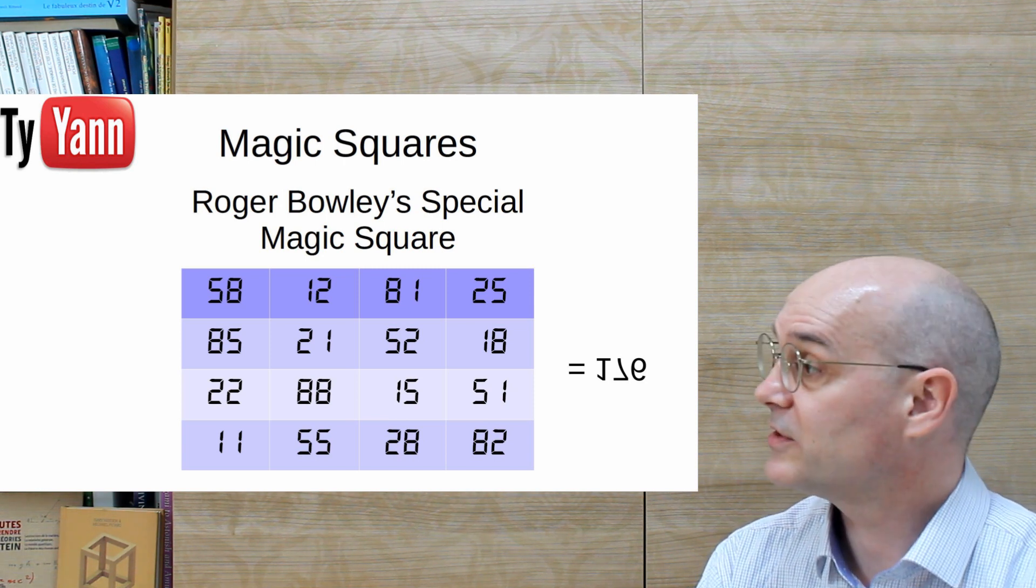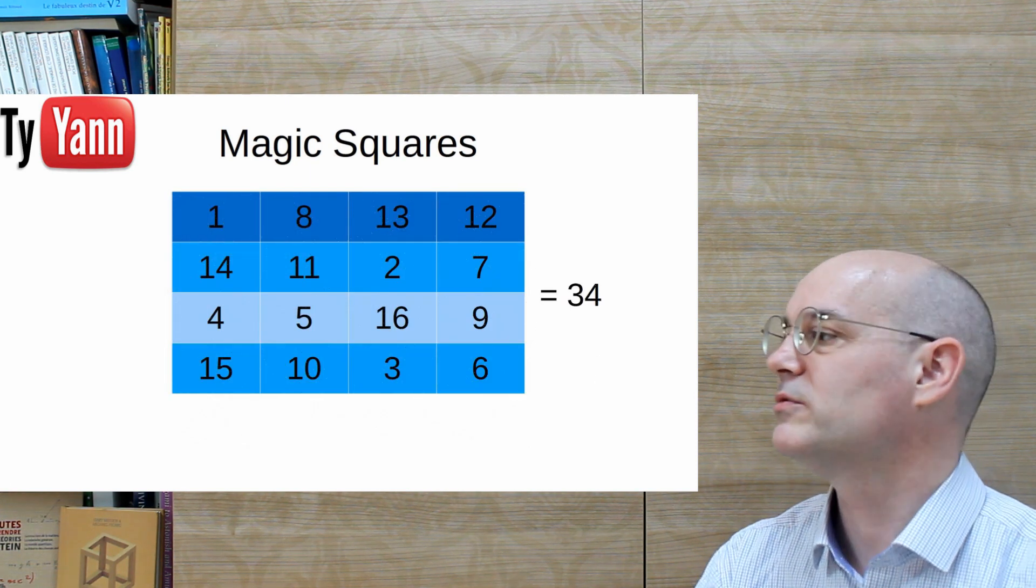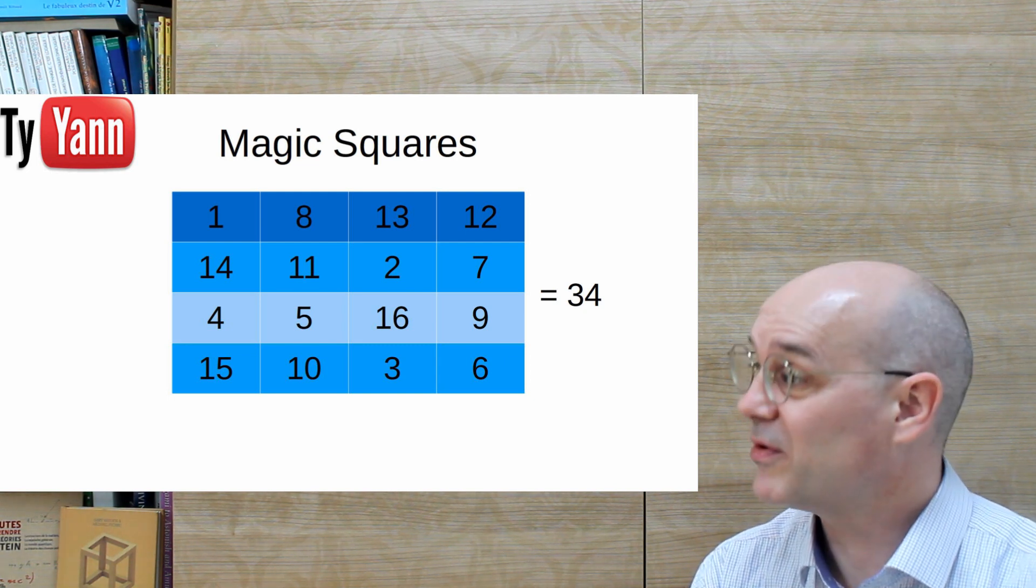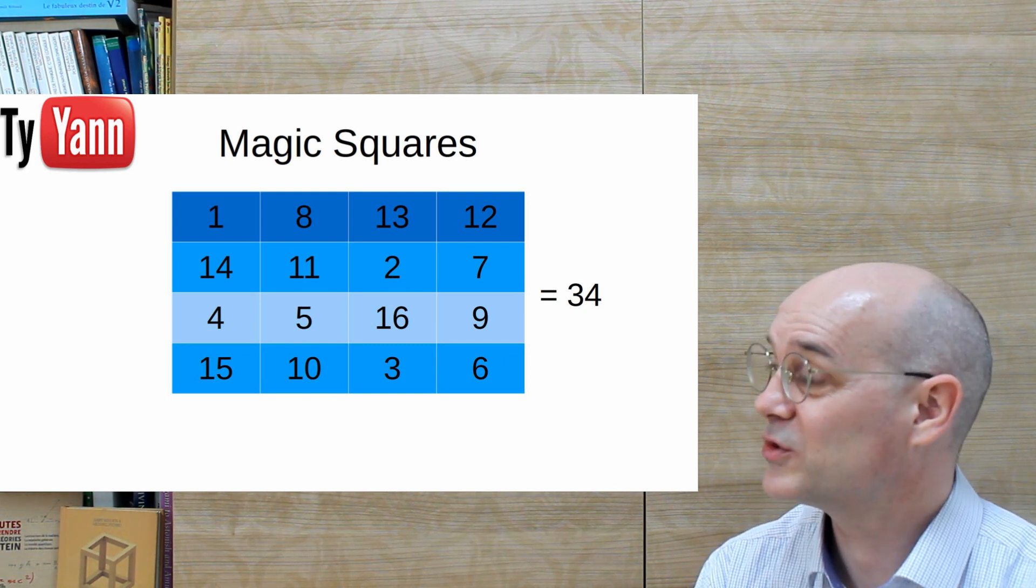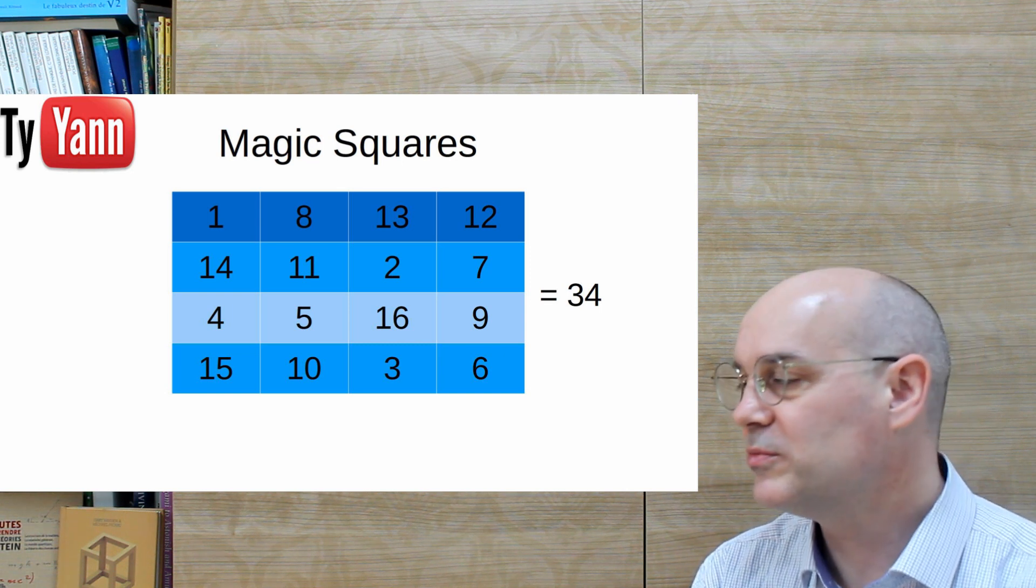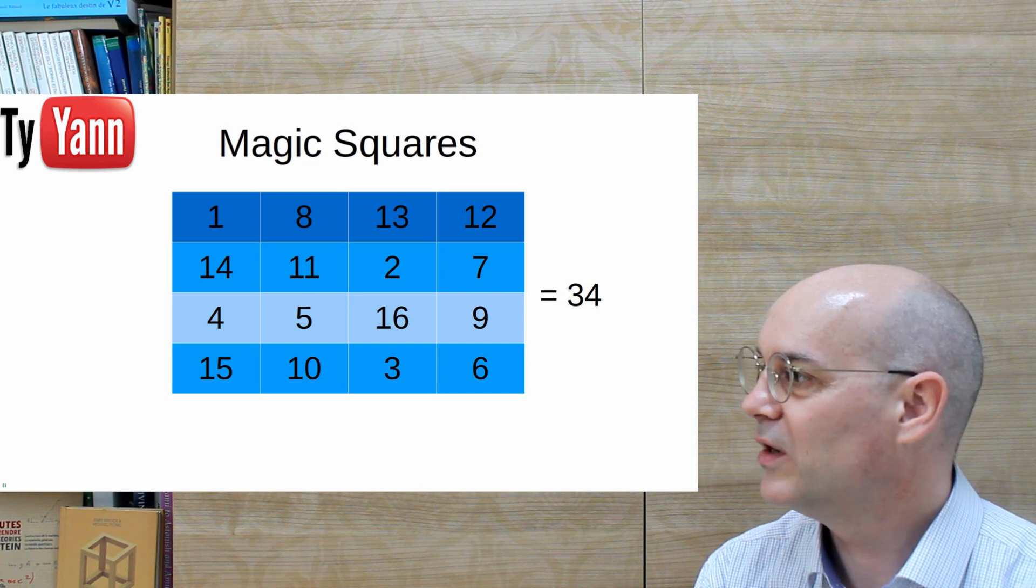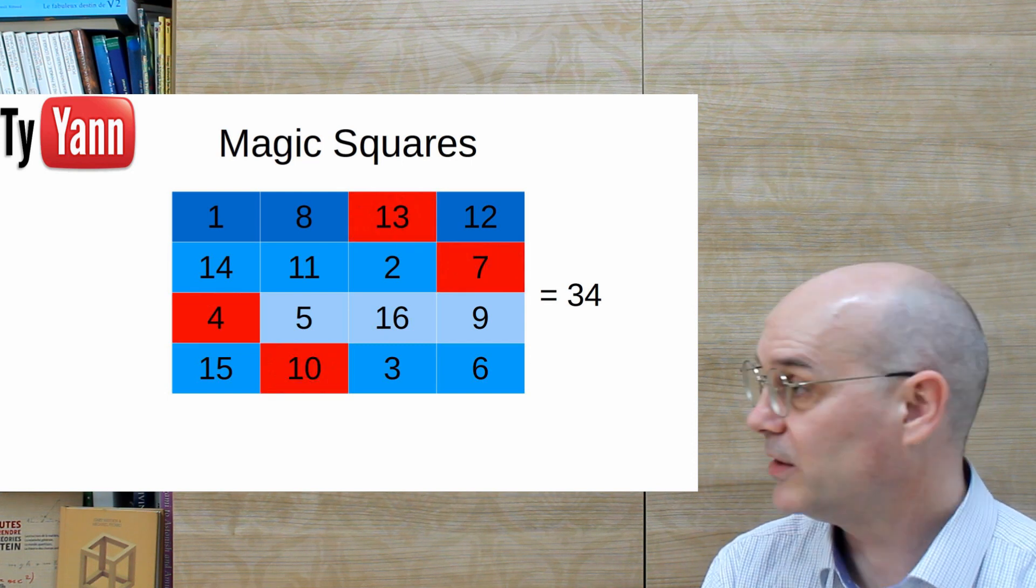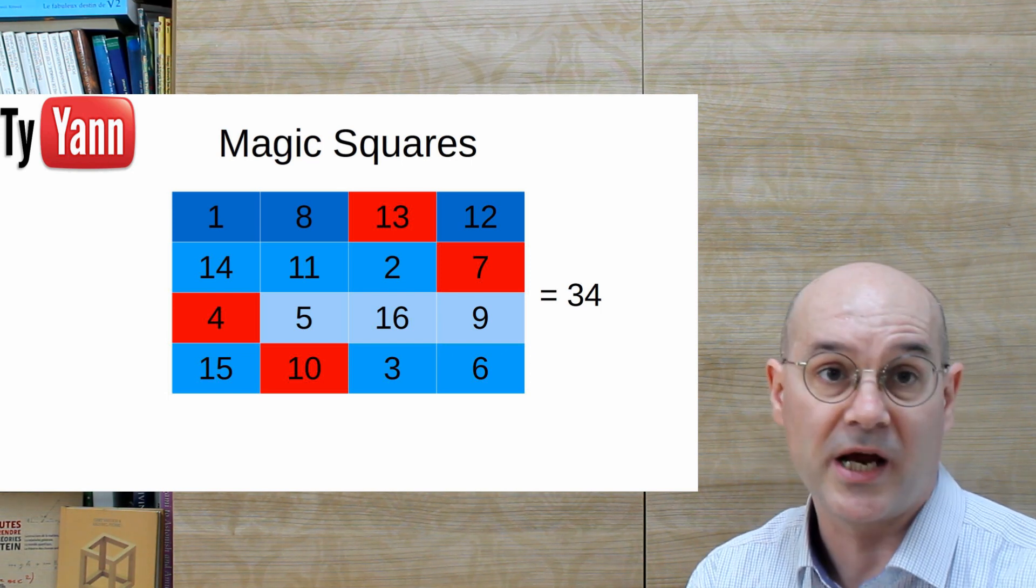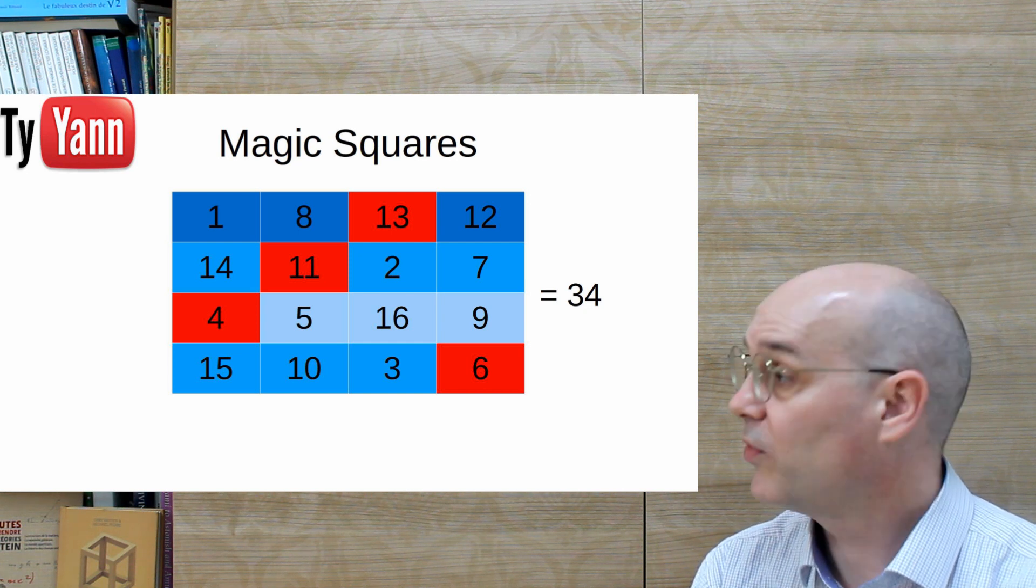And here's another one. This one is very beautiful. It's pan magic. It's a four by four pan magic square. So we have, of course, the lines, the columns, and the main diagonals being equal to 34. But we also have this semi-diagonal here, and that one, and any actually semi-diagonal being equal to 34.